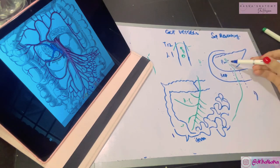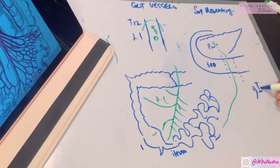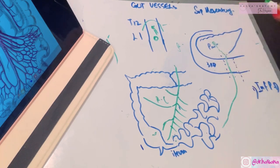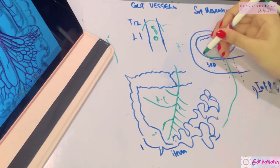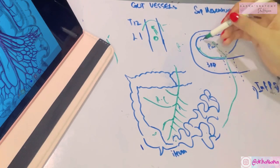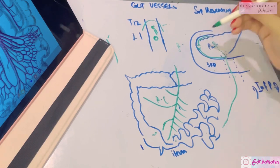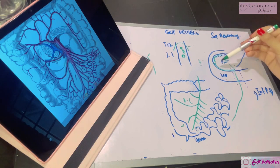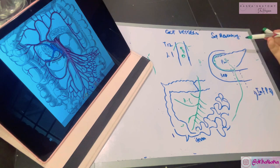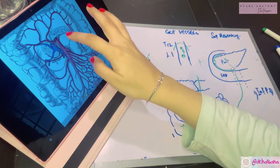The first branch of the superior mesenteric artery arises at the upper border of the third part of the duodenum — this is the inferior pancreaticoduodenal artery. It runs within the pancreaticoduodenal curve and anastomoses with the superior pancreaticoduodenal artery, forming a connection between the celiac trunk and the superior mesenteric artery. During its course it supplies the pancreas and the duodenum.